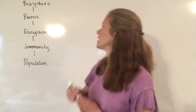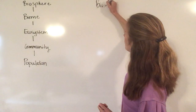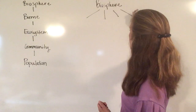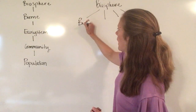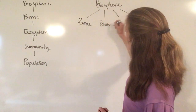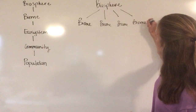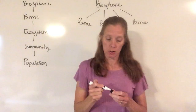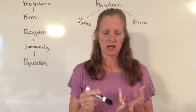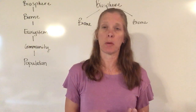What I want to make sure you understand is that if I start with the biosphere, the biosphere is going to contain several different biomes. I'm assuming that probably a lot of you have studied biomes before in an earlier science class. Biomes include things like deserts, savannas or grasslands, the tundra, and the tropical rainforest. So those are biomes.